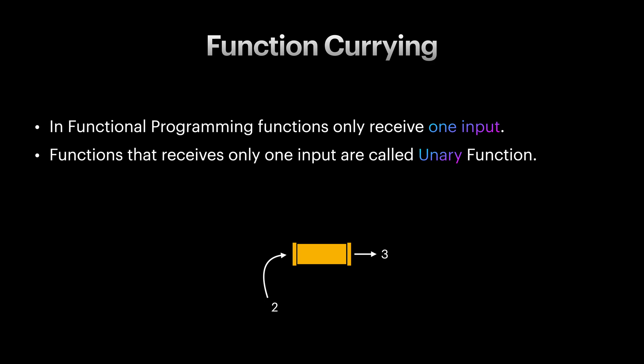One way is to wrap all parameters in an object and pass only the object to the function. That can be one way. But in this lesson I want to show you another way which is called currying.